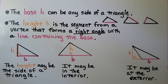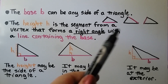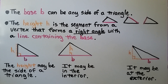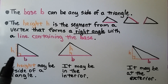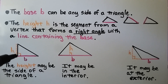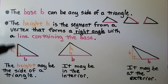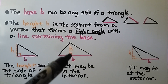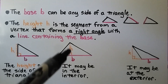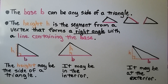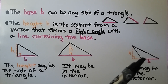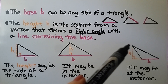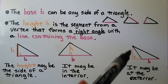The base, b, of a triangle can be any side. The height, h, is the segment from a vertex that forms a right angle with a line containing the base. The height may be a side of the triangle, it may be in the interior of a triangle, or it may also be at the exterior of a triangle — if we extend the base line, we can go from a vertex and make a right angle, and that would be the height.